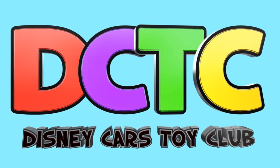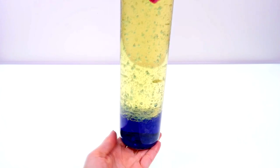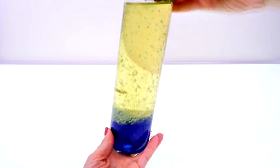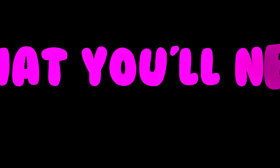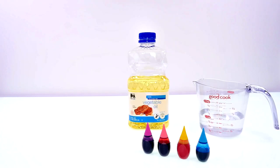Hey guys, welcome back to the channel. It's Kaylee and today I'll show you how to make your very own lava lamp. You'll need food coloring, a cup of water, vegetable oil, a water bottle, and Alka-Seltzer.